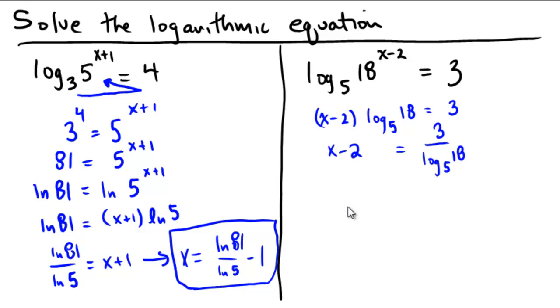Then as a last step, you'd get x equals, we'd need to add 2 to both sides, so we'd get 3 over log base 5 of 18, and then we would add 2. So that would be the final answer in another version.